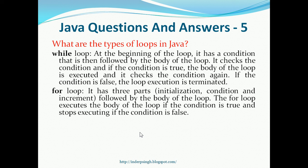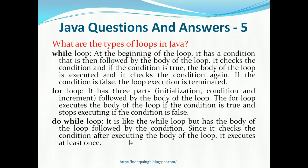The other type of loop in Java is the for loop. It has three parts: initialization, condition, and increment followed by the body of the loop. The for loop executes the body of the loop if the condition is true and stops executing if the condition becomes false. The third type is a do-while loop. It is similar to the while loop but has a body of the loop followed by the condition. Since it checks the condition after executing the body of the loop, it executes at least once.